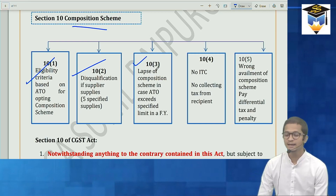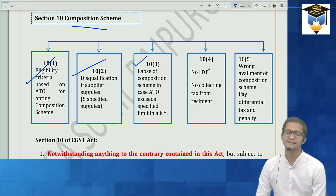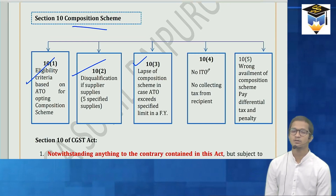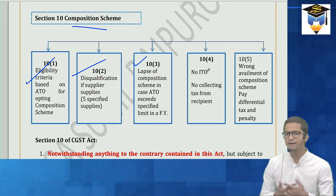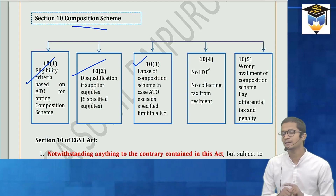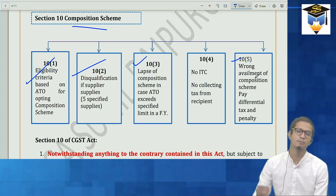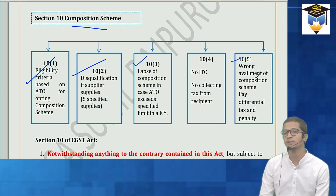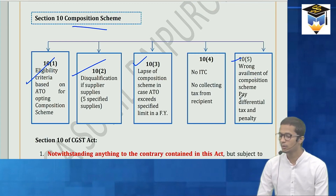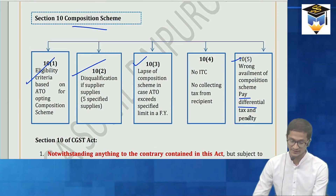Subsection 10(3) talks about when your composition scheme will lapse. Subsection 10(4) talks about if you are opting for composition scheme, you cannot take ITC nor can you collect tax from your recipient. The last subsection talks about what happens if you have wrongfully availed composition scheme when you were not eligible — you'll have to pay differential tax, penalty, and interest.